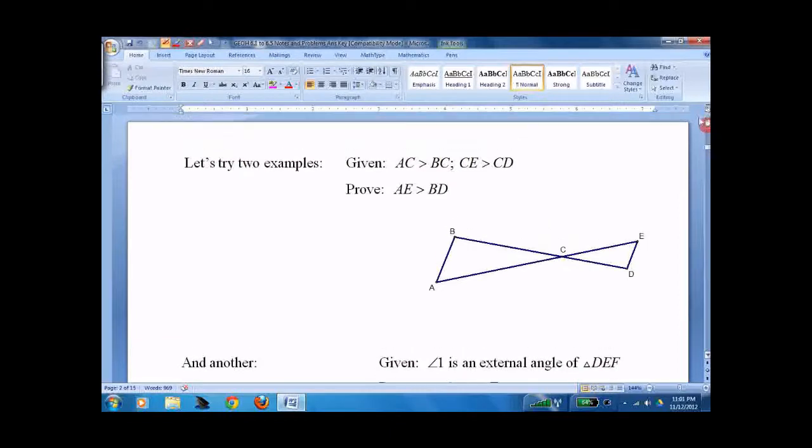So, try some proofs. I really didn't leave myself as much room as I probably should have. If AC is greater than BC, CE greater than CD given.